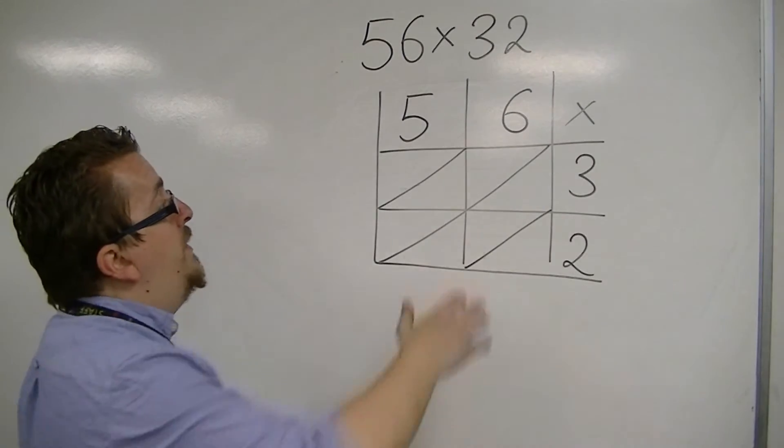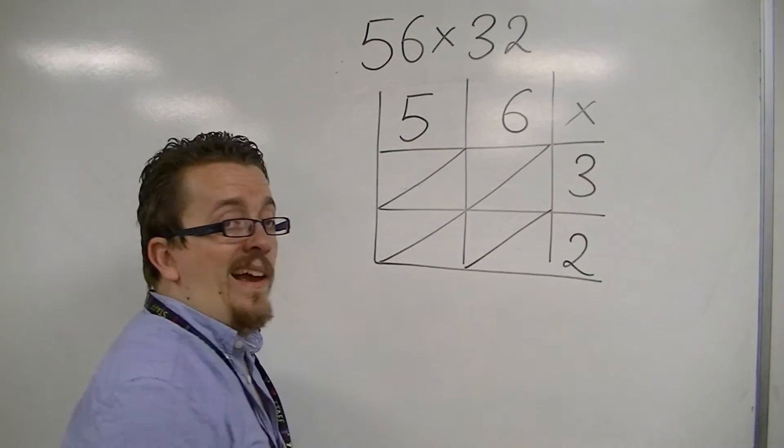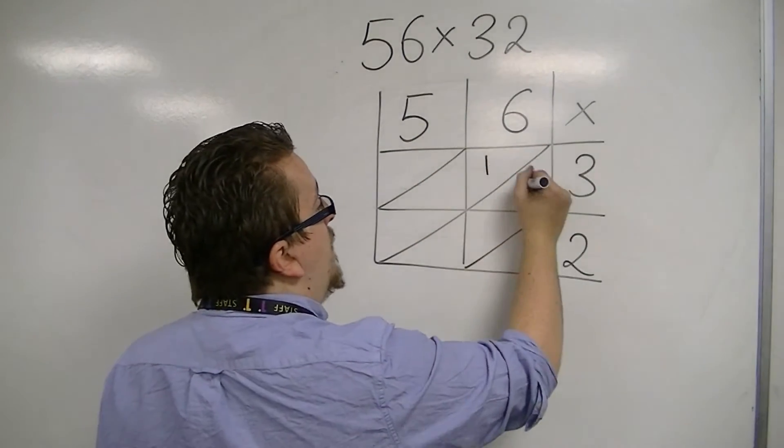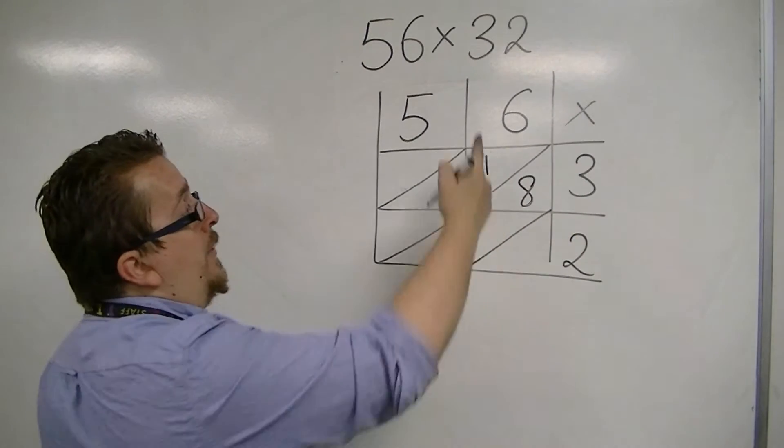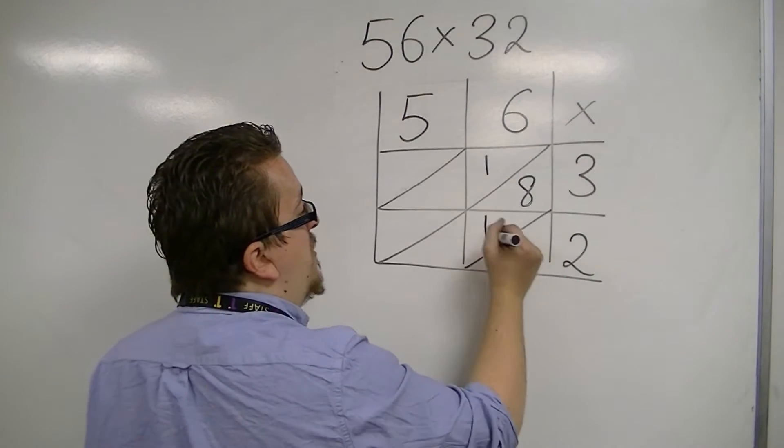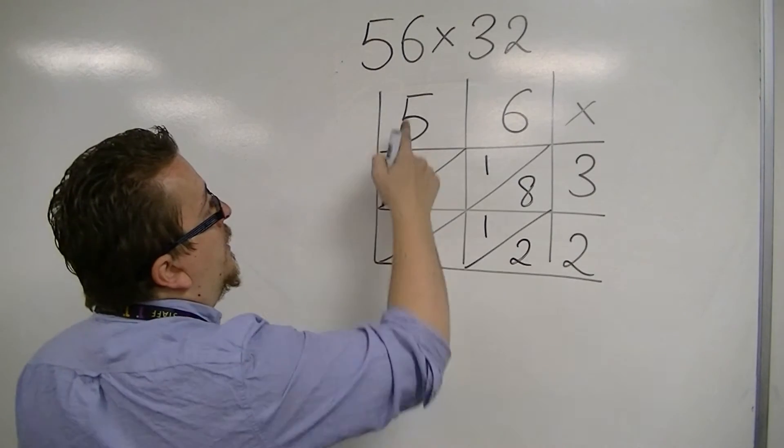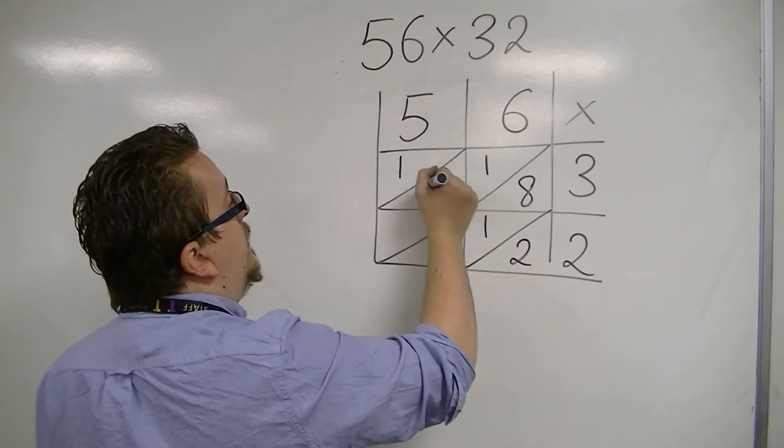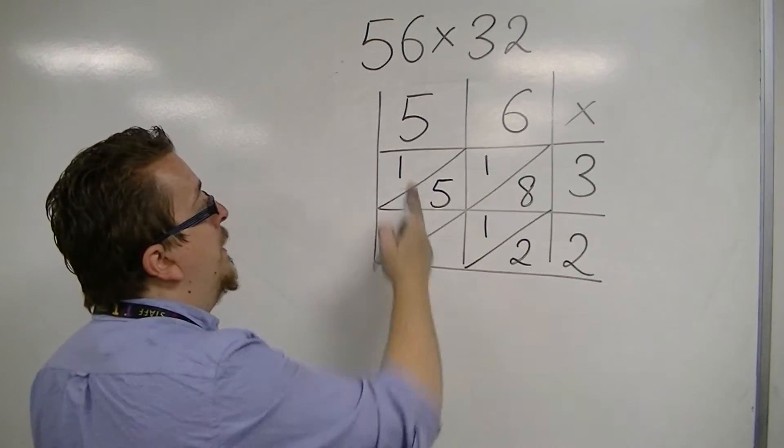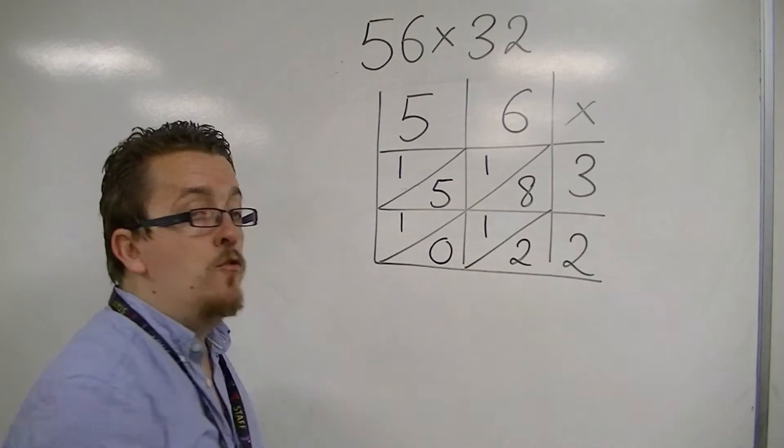So then, we do 6 times 3 is 18, so we write the 1, then the 8. 6 times 2 is 12, we write the 1, then the 2. 5 times 3 is 15, the 1, then the 5. 5 times 2 is 10, the 1, then the 0.